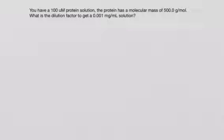Here's a quick video about how you can calculate a dilution factor. Let's assume you have a 100 micromolar protein solution and the protein has a molecular mass of 500.0 grams per mole. We want to get a 0.001 milligram per milliliter solution and we ask what is the dilution factor.